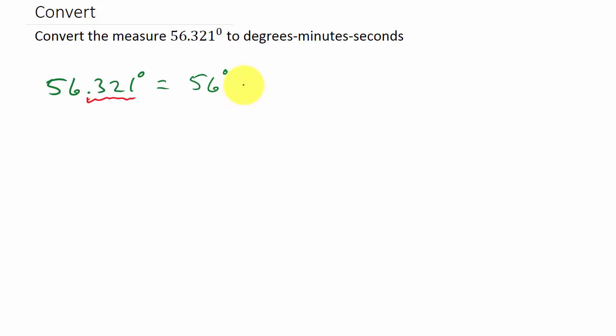So that's plus 0.321 times—now remember, this decimal is in degrees. To go from degrees to minutes, we multiply the decimal part by 60, and that'll be minutes.